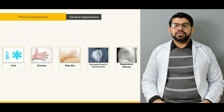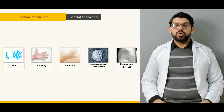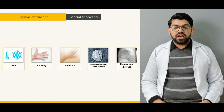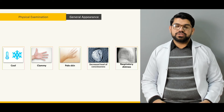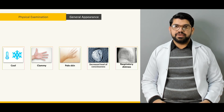Next would be general appearance — how a patient presents to you and what red flags need to be identified in a patient presenting with GI bleed. What should be noticed in the patient, and what should be done when you notice any signs or red flags?